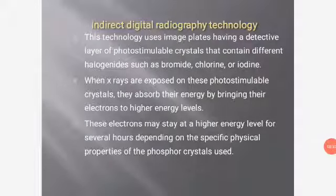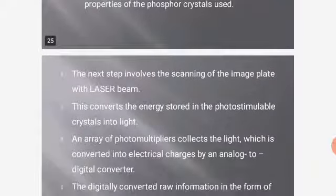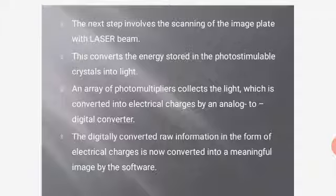Indirect Digital Radiography Technology uses image plates with a detective layer of photo-stimulable crystals containing halogenides such as bromide, chlorine, or iodine. When exposed to X-rays, these crystals absorb energy by bringing electrons to higher energy levels, which may remain elevated for several hours depending on the phosphor crystals' properties. The image plate is then scanned with a laser beam, converting stored energy into light. An array of photo-multipliers collects the light, which is converted into electrical charges by an analog-to-digital converter, and software then converts the raw data into a meaningful image.